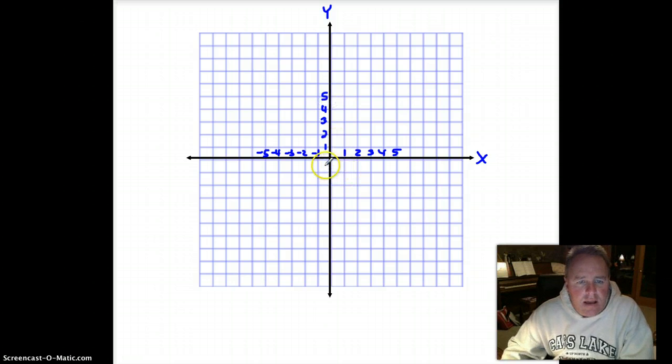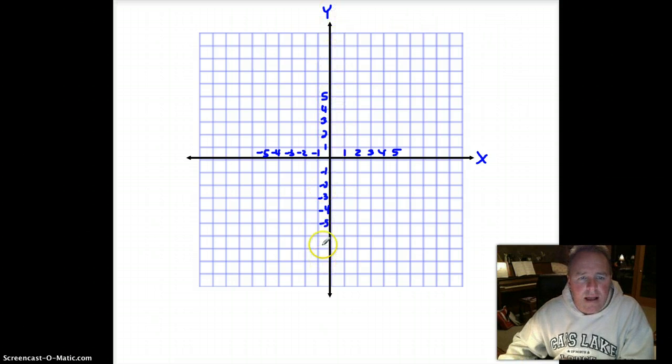And if we go below the zero, we get into our negative numbers. Again, negative two, negative three, negative four, and negative five along the y-axis.